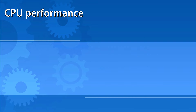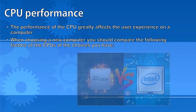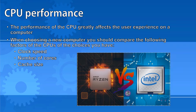The performance of the CPU on a computer will greatly affect the experience a user has when they're using that computer. When choosing a new computer and comparing processors, the factors you should consider are clock speed, number of cores, and cache size.